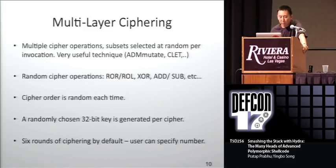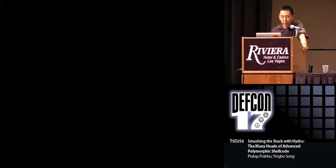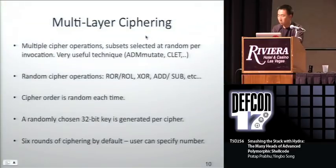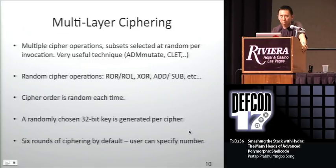Hydra uses six rounds of ciphering by default, but the user can specify a number.